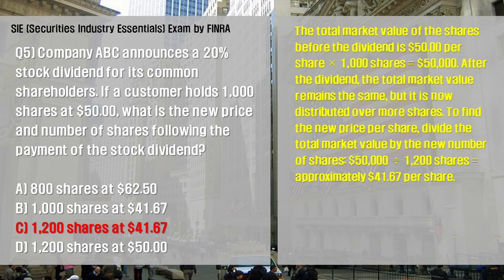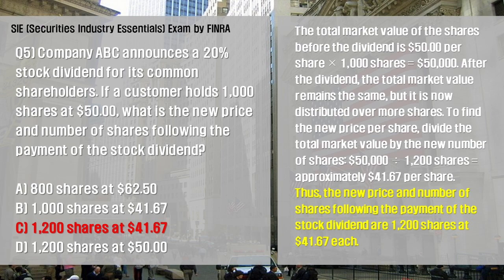The total market value of the shares before the dividend is $50 per share × 1,000 shares = $50,000. After the dividend, the total market value remains the same but is now distributed over more shares. To find the new price per share, divide the total market value by the new number of shares: $50,000 ÷ 1,200 shares ≈ $41.67 per share. Thus, the new price and number of shares following the payment of the stock dividend are 1,200 shares at $41.67 each.